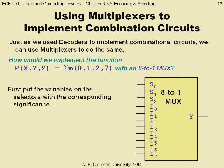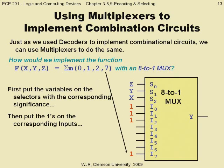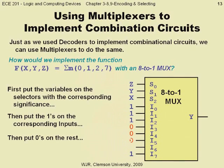We first simply assign the variables to the select lines in corresponding significance. We then assign ones and zeros to the inputs corresponding to each min term of the function. Remember, the select lines of the mux determine which input will be output. So when we input a 101 into the mux, whatever is on input 5 will come out.